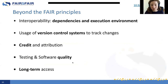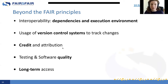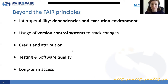Beyond the FAIR principles, we noticed things that aren't in the FAIR principles — for example, interoperability, dependencies and execution environment, and the usage of version control systems, which doesn't appear in the FAIR principles. Credit and attribution, testing, software quality, and long-term access are also things beyond the FAIR principles that we may want to include in FAIR principles for research software.